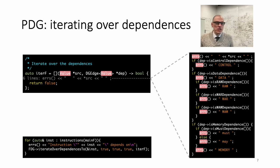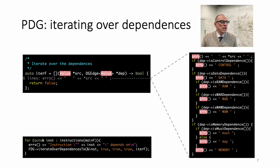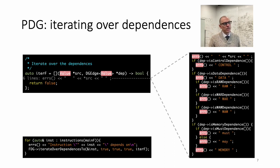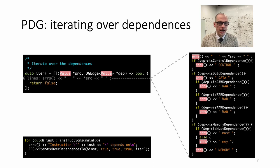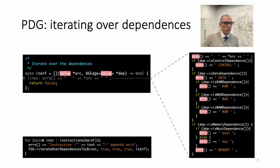Inside this lambda function you have the dependence object, which means you can query it to understand the nature of the dependence. You can check if this dependence is a control dependence, or if it is a data dependence — and if it is a data dependence, whether it is a read-after-write, write-after-read, or write-after-write. All of these concepts are taught in conventional compiler classes, so I'm not describing them here. If you don't know them, just go to my website or another compiler class website — the information is there. I also teach these concepts in my class 323, Code Analysis and Transformation.